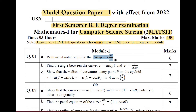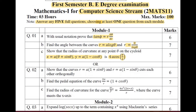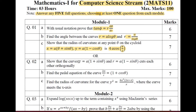Now let us move on to Module 1. Question 1a: with usual notation, prove that tan φ = r·dθ/dr. Question 1b: find the angle between r = a·log θ and r = a/log θ. Question 1c: show that the radius of curvature at any point θ on the cycloid x = a(θ + sin θ), y = a(1 − cos θ) is ρ = 4a·cos(θ/2). The choice question 2 covers: show that r = a(1 + sin θ) and r = a(1 − sin θ) cut each other orthogonally, find the pedal equation for 2a/r = 1 + cos θ, and another radius of curvature problem.